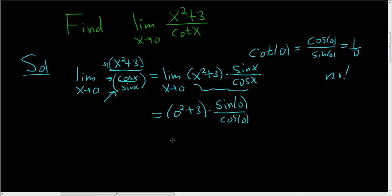Sine of 0 is 0, so you get 3 times 0 over 1. Cosine of 0 is 1, so you get 0, and that's it.